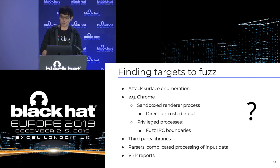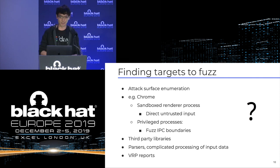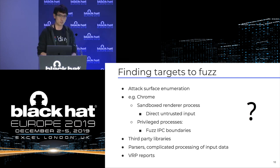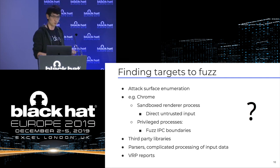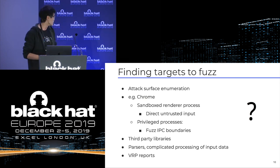Beyond attack surface enumeration, another way to look for things is to look at third-party libraries. We've encountered countless third-party libraries and found that most of them are severely lacking in quality and can be extremely buggy. Parsers and more generally any complicated processing of input data is another thing you want to fuzz — fuzzers tend to do very well in this kind of code. And if you have a vulnerability rewards program, you can use those reports as feedback for where you might be missing fuzzing coverage.